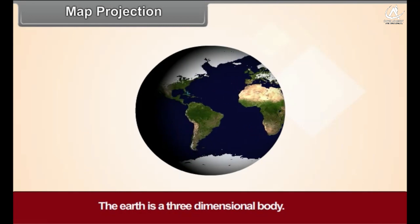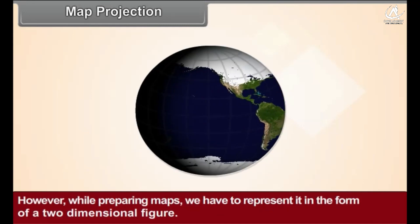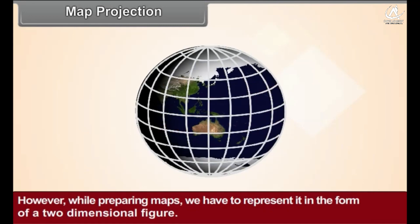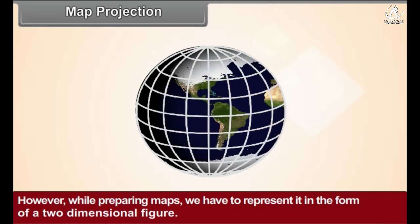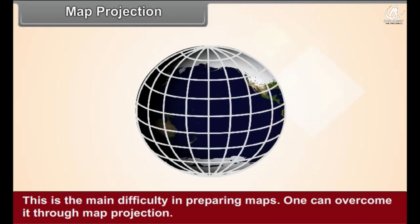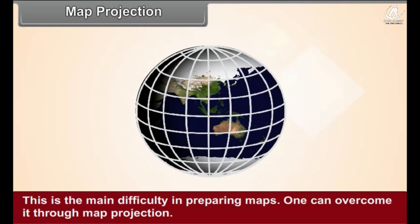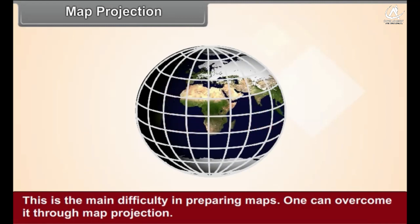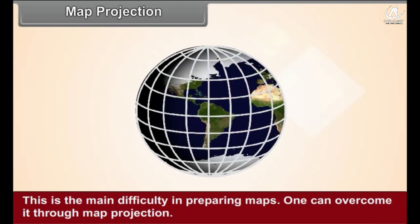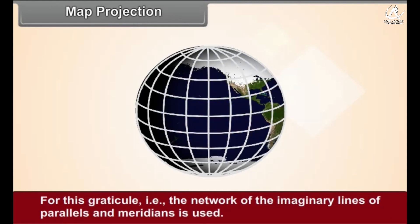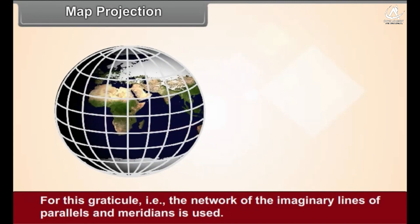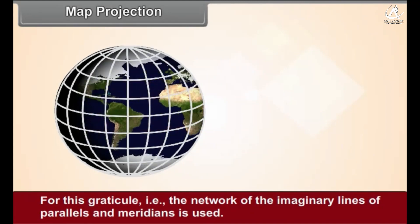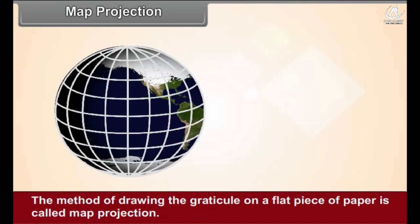The earth is a three-dimensional body. However, while preparing maps we have to represent it in the form of a two-dimensional figure. This is the main difficulty in preparing maps. One can overcome it through map projection. For this, the graticule, that is the network of imaginary lines of parallels and meridians, is used.